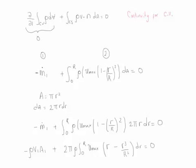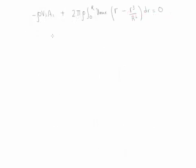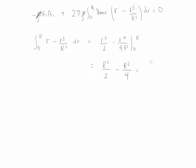Let's now do the integration of this formula. To simplify this equation, notice we can cancel density from both sides and take u_max out of the integral. This integral becomes r²/2 - r⁴/(4R²) from 0 to R. This simplifies to R²/2 - R²/4, and if we solve this, it becomes R²/4.